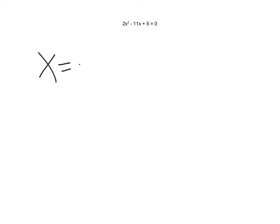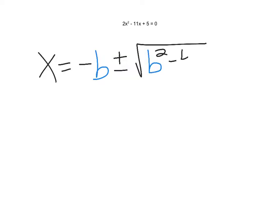Alright, let's take a look at the quadratic formula. First of all, we need our quadratic to be in standard form. Is this standard form? Yep, we have ax squared plus bx plus c. So now we just need to remember the quadratic formula: x equals the opposite of b, plus or minus the square root of b squared minus 4 times a times c, all over 2a.